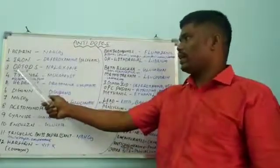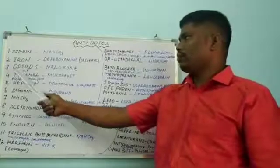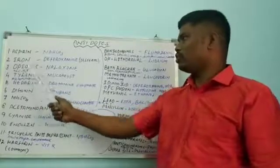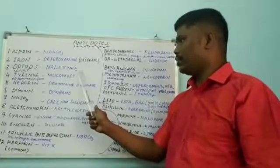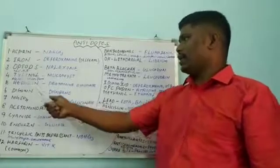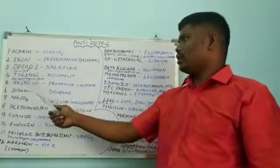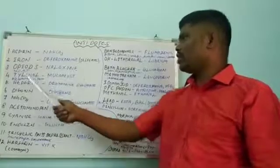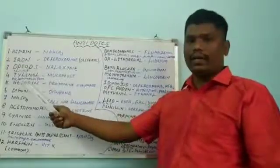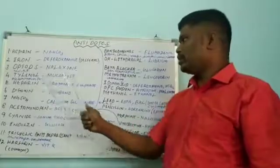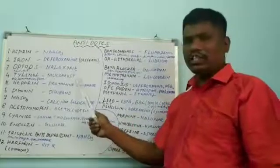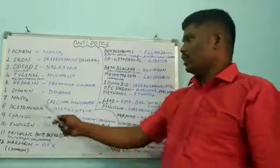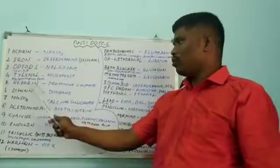In opioid overdose — like morphine, codeine, heroin, fentanyl — naloxone is used as an antidote. In Tylenol overdose, Mucomyst is used as an antidote. Tylenol is nothing but acetaminophen or paracetamol. Mucomyst is otherwise called acetylcysteine or N-acetylcysteine.